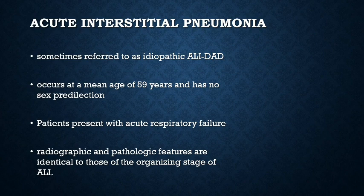Acute interstitial pneumonia is a term used to describe widespread acute lung injury of unknown etiology associated with a rapidly progressive clinical course. Patients present with acute respiratory failure, often following an illness of less than 3 weeks' duration that resembles an upper respiratory tract infection. The radiographic and pathologic features are identical to those of the organizing stage of acute lung injury.